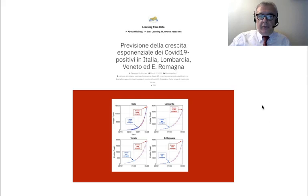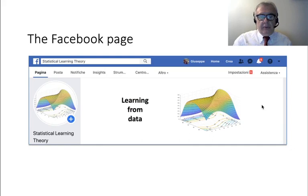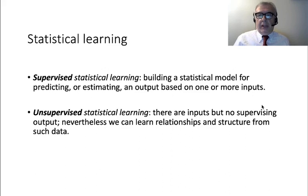You can see those posts as examples of applied data science. The methodology is very simple, but when you are in great danger you have to communicate very clearly. The objective was to convince people that we were in big trouble and that something had to be done very quickly. There is also a Facebook page where I post new articles from the blog.